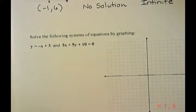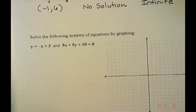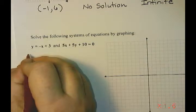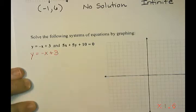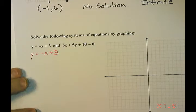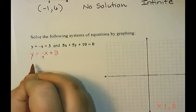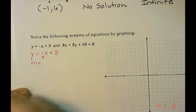And what we want to do is graph those two lines and then look to see where they intersect. So I'm going to start with the first line, y equals negative x plus 3. So I like to graph using slope and y-intercept. So in this case, the slope is the number in front of the x.